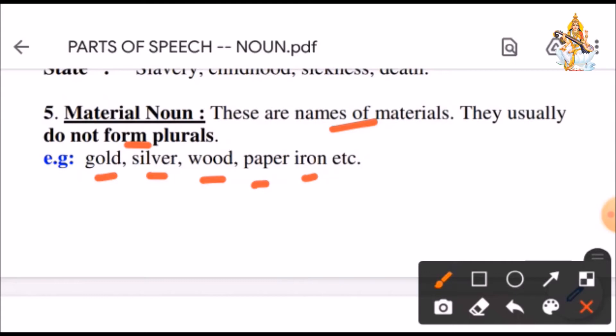These are the materials out of which we make things. Like with gold and silver, we make jewelry. We make furniture with wood, etc. So, we have studied five kinds of nouns. Proper noun, common noun, collective noun, abstract noun and material noun.